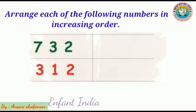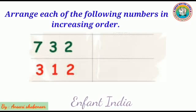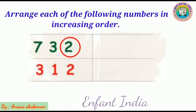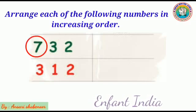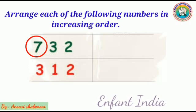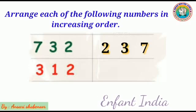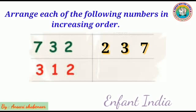So what is the smallest number here? 2, then 3, and the largest number is 7. So the order is 2, 3, 7.